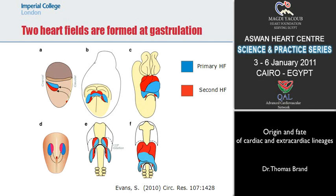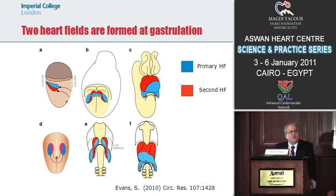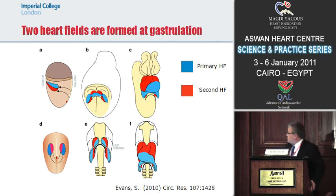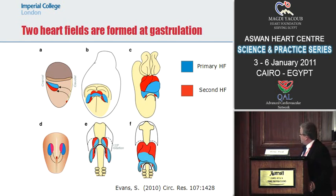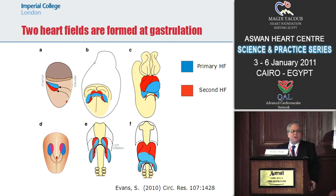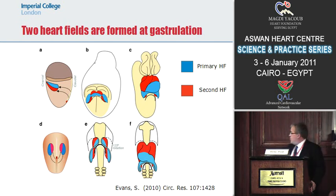The blue part is the area that differentiates first — all what you see in the primary heart tube which is formed initially is myocardium derived from this blue area. The myocardium labeled in red, the second heart field, is myocardium that does not participate in the initial formation of the heart tube but is added later. There is an area here which is a population of stem cells that are gradually specified to become cardiac myocytes and are added particularly to the anterior part of the growing heart tube.